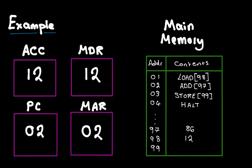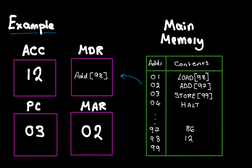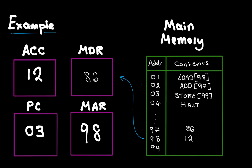Next we process instruction number two. The program counter contains two, so we copy that into the memory address register, go to main memory, and increment the program counter. The second address contains 'add 97'. We copy that to the memory data register, then go to main memory and copy in 86 from address 97. Because the instruction was to add, we add 86 to the accumulator: 86 plus 12 equals 98.